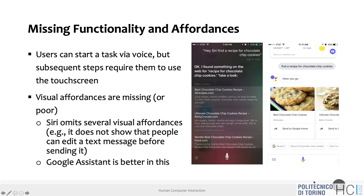For example, with Siri, saying 'find a recipe for chocolate chip cookies' results in 'I found something on the web,' and the next step is picking up the phone and tapping one of the links. Similarly, Google Assistant shows several recipe cards that, if clicked, open in a web browser. The interaction starts with voice but continues on screen.